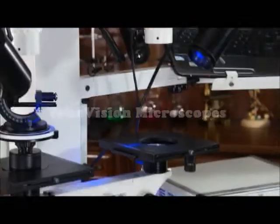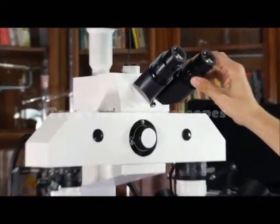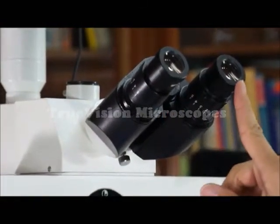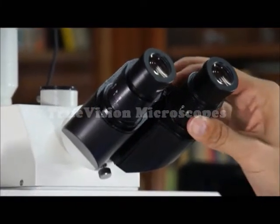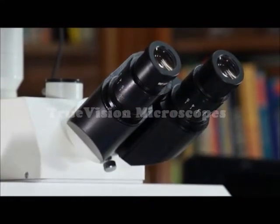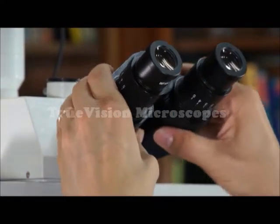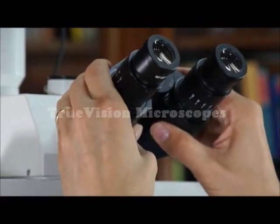The microscope also has diopter adjustments on the eyepieces so that if one eye is in focus and the other eye is not in focus, you use these diopter adjustments to get both eyes in focus at the same time. It also has interpupillary distance adjustment, this adjusts for the distance between your eyes.